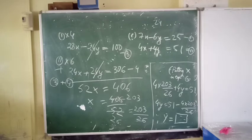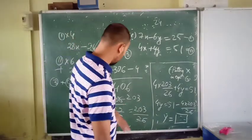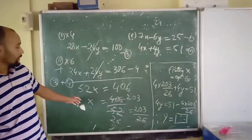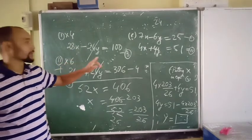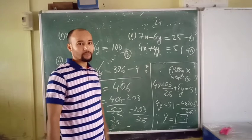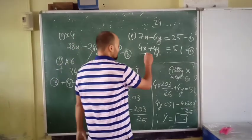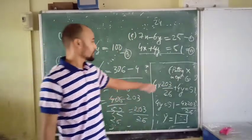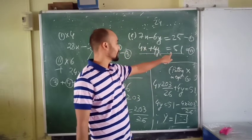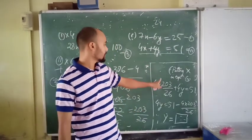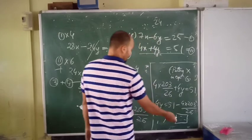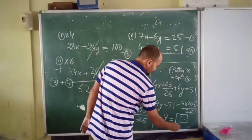The video was stopped due to some technical problems. We have found the value of x as 203 by 26. Now we choose any of the four equations to find y. I am choosing equation 2 because it contains simpler numbers. Putting x equals 203 by 26 into equation 2: 4x plus 4y equals 51, so 4 times (203 by 26) plus 4y equals 51. Solve this to get the value of y.